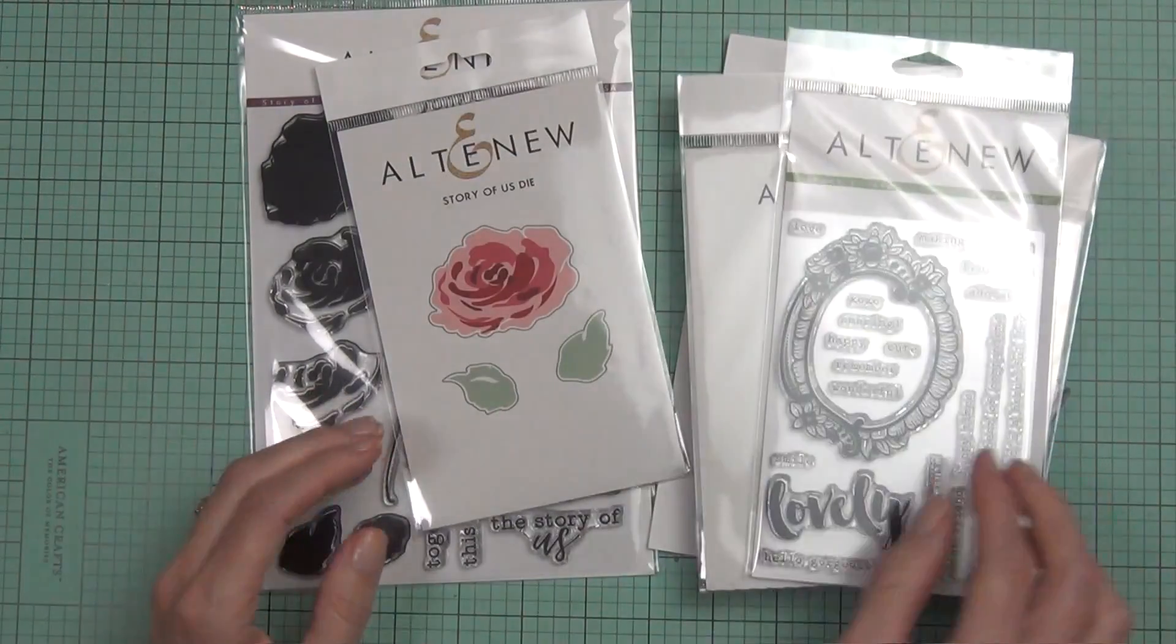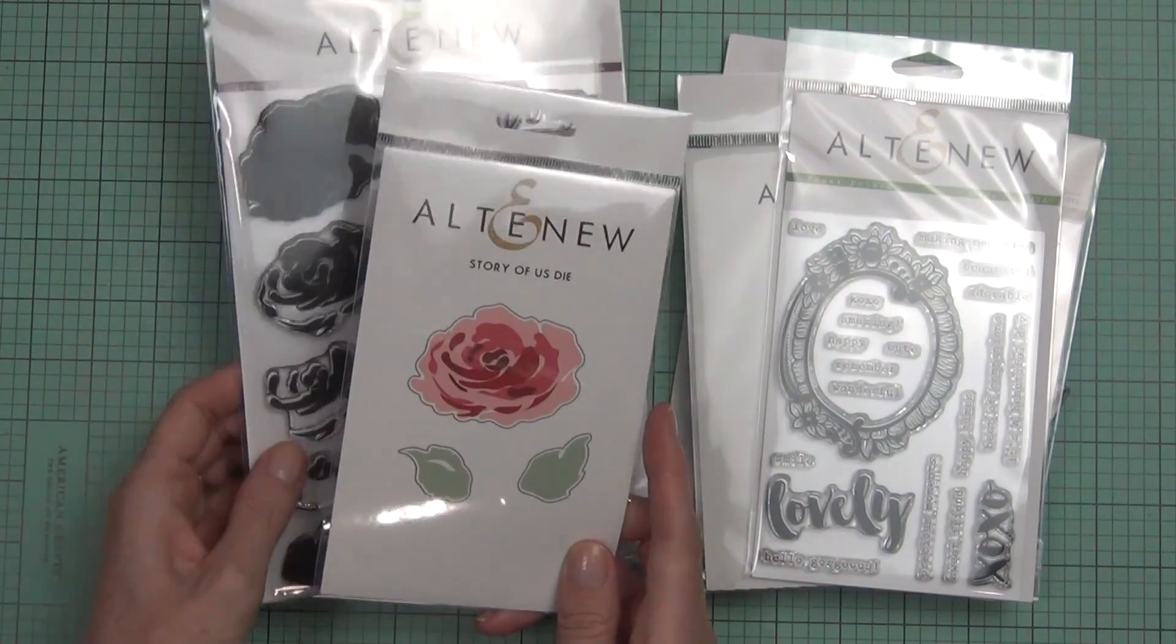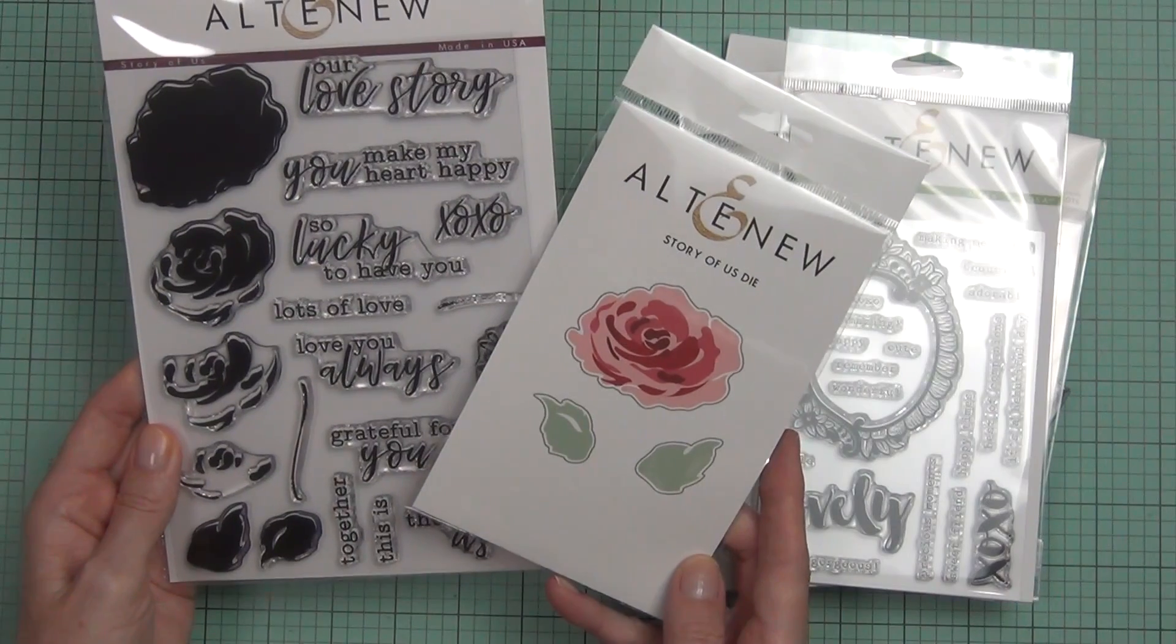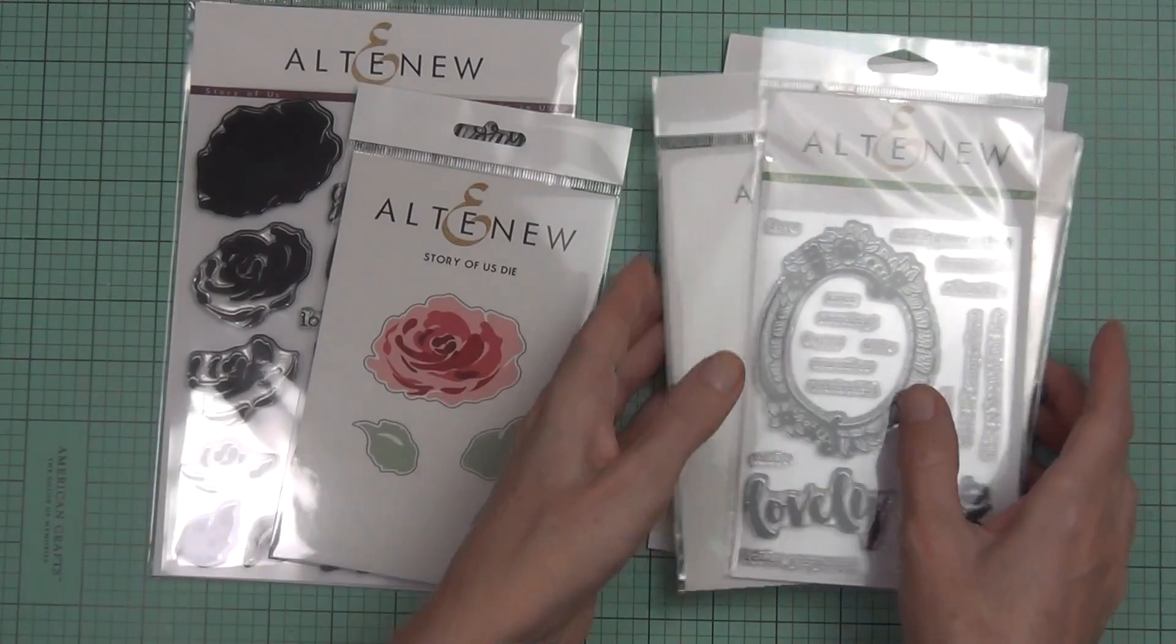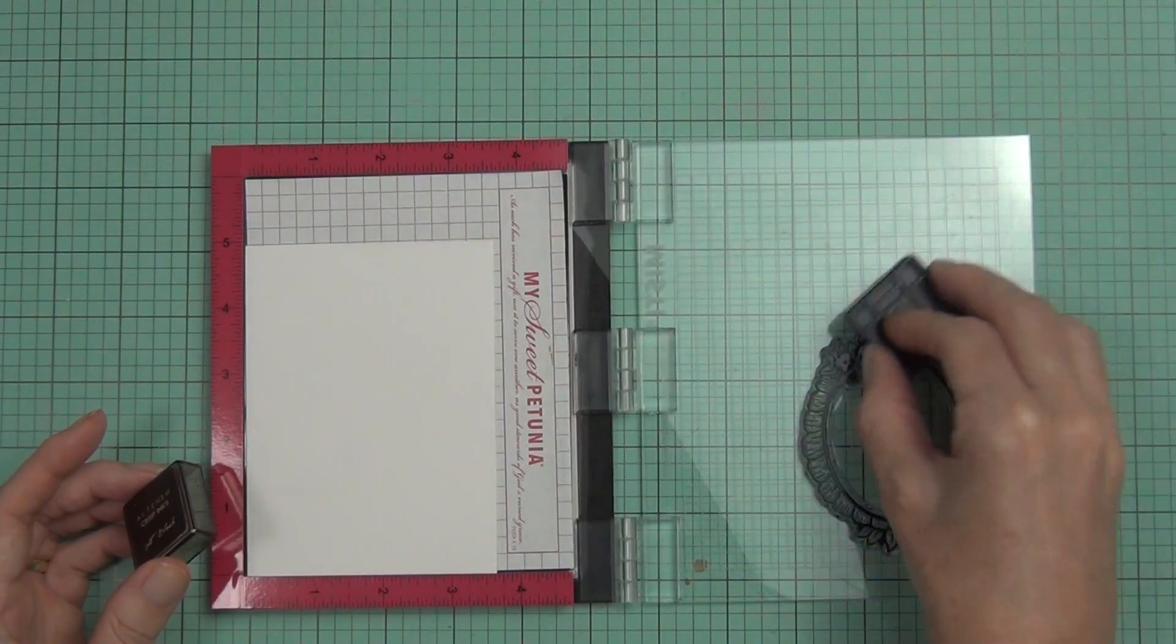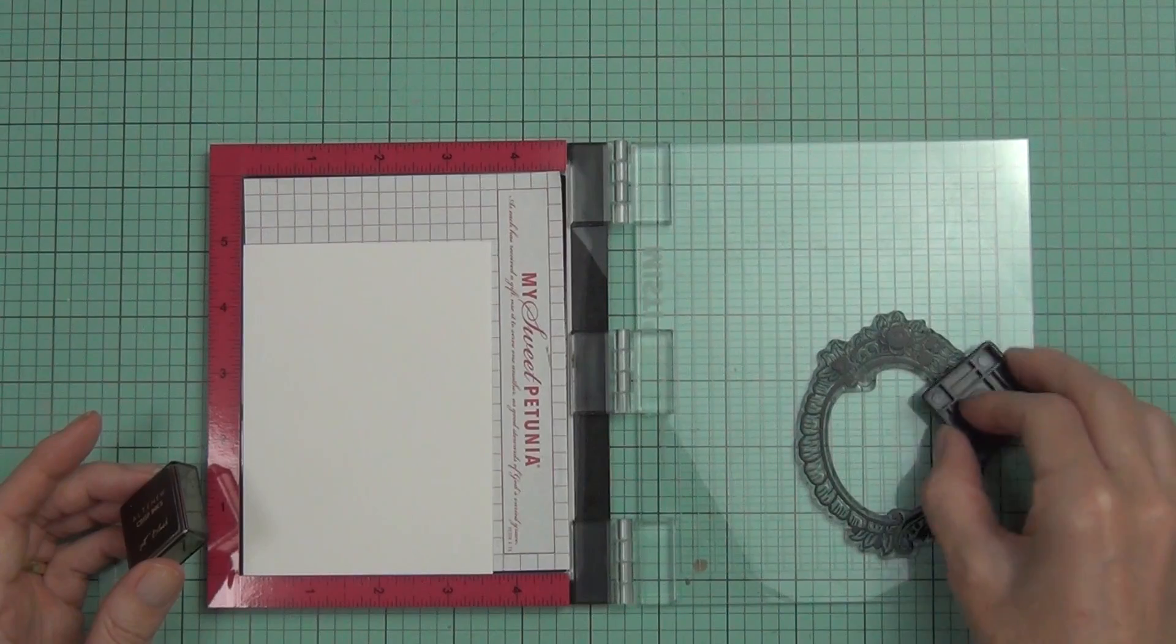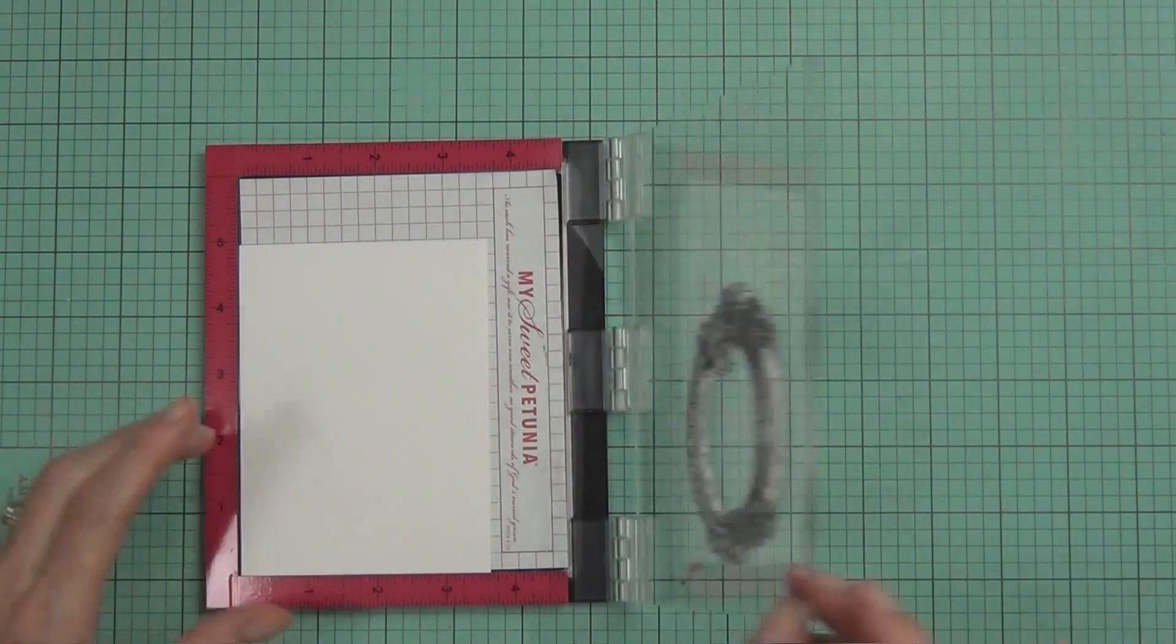Then two sets of stamps and coordinating dies. One of my favorites you would have seen me use over and over—it's the Sweet Friend set. And also this one's called Story of Us, but it's one of those watercolor flower images with some beautiful sentiments in that stamp set as well.